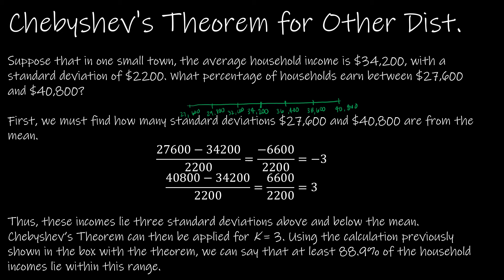Now, in doing that, I can see that $27,600 is three standard deviations to the left. And $40,800 is three standard deviations to the right. Now, I want you to notice how we did the math here, which is similar.